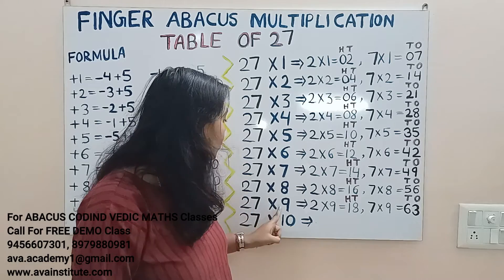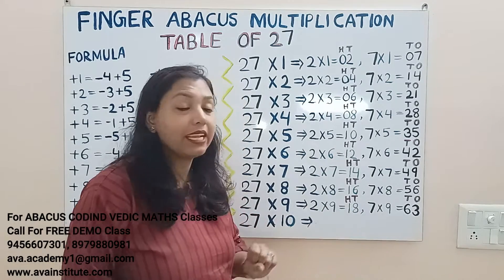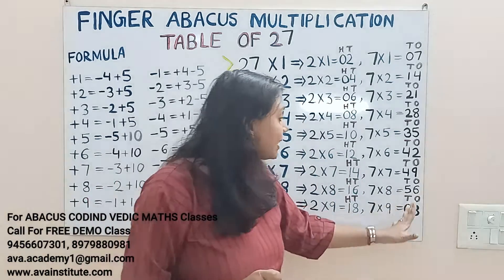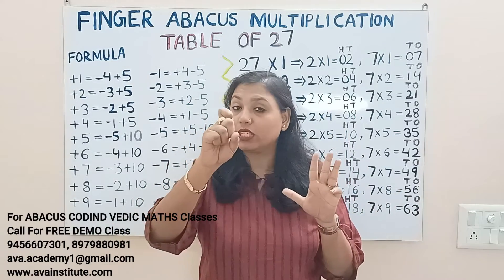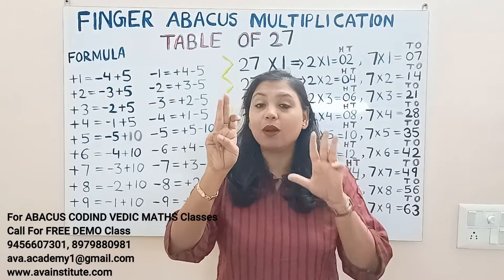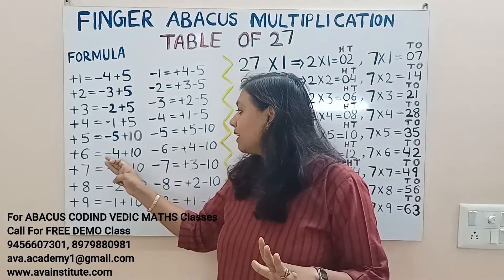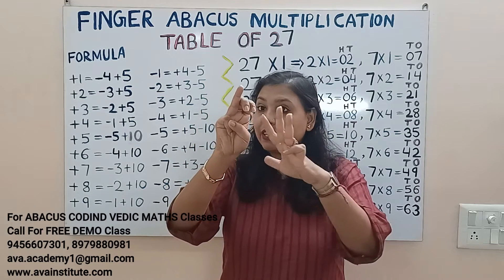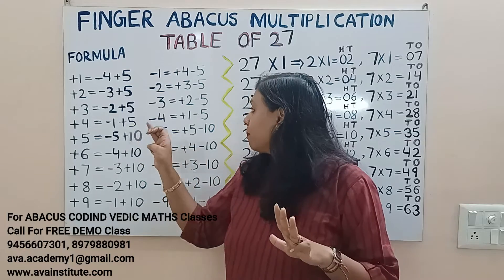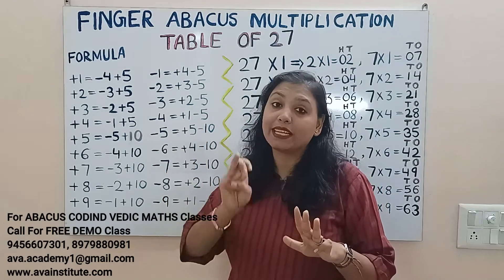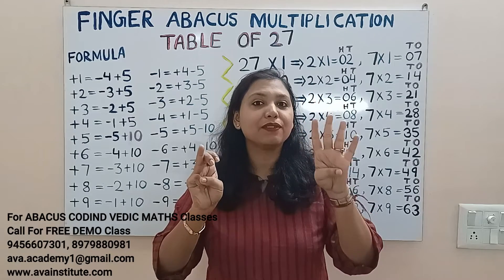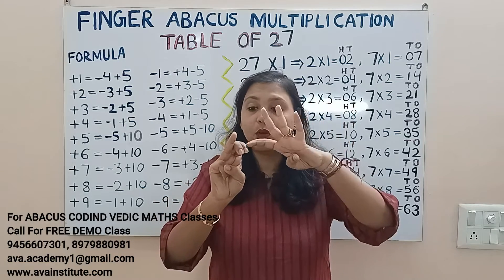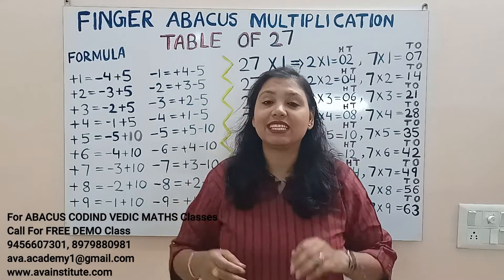27 nines: 2 nines are 18 — in hundreds 1, in tens 8. 7 nines are 63 — in tens 60, in ones 3. To add 60: plus 6 formula is minus 4 plus 10, so plus 60 formula is minus 40 plus 100. And minus 40 formula is plus 10 minus 50. The answer is 200, 10, 20, 30, 40, plus 1, 2, 3 — 243 is the answer.